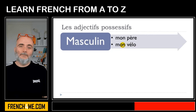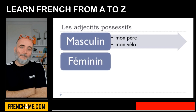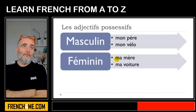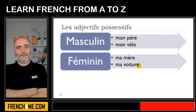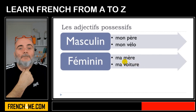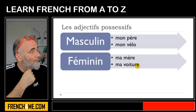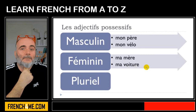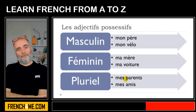Now two feminine examples. Mother is feminine, so it's ma mère — my mother. Voiture means car and it's feminine — une voiture — so you use the feminine form: ma voiture.